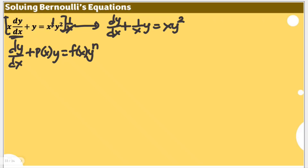This is really a Bernoulli equation because you can see an expression of y to the power of n, where n is equal to 2. Note that n should not be 0, because if it's 0 it's simply a linear equation. If n equals 1, there are also other processes to solve it. So strictly, n should not be 0 and should not equal 1. Here we have n equal to 2.